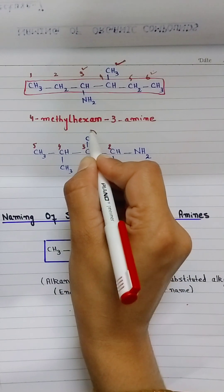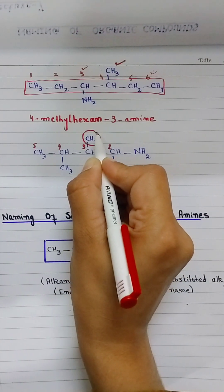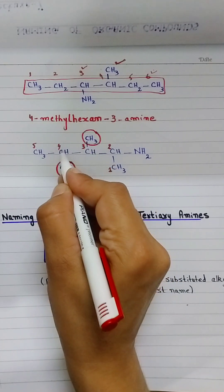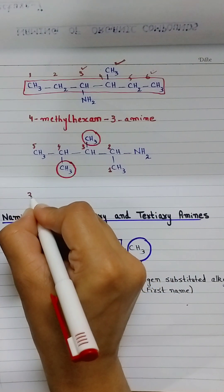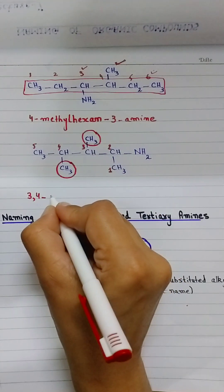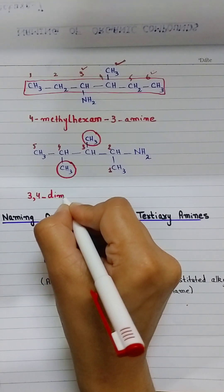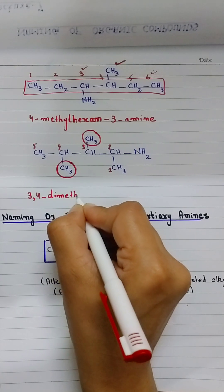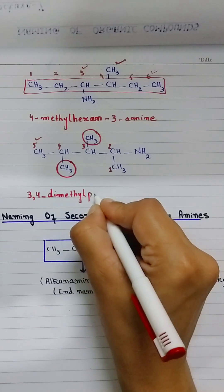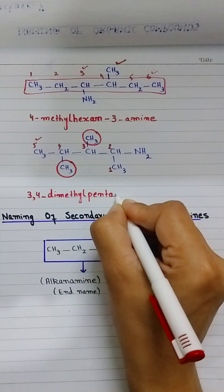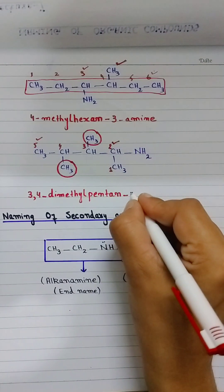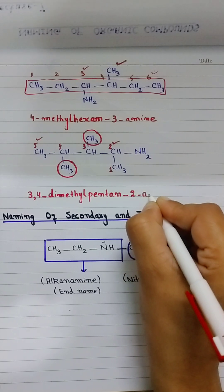Here we have two substituents. One alkyl group is at carbon 3 and another at carbon 4 — both are similar one-carbon alkyl groups, so we use the prefix 'di' and call them dimethyl. The five-carbon chain is represented as pentane, with the 'e' replaced. The amino group is attached to carbon number 2. The end name is amine, giving 3,4-dimethylpentan-2-amine.